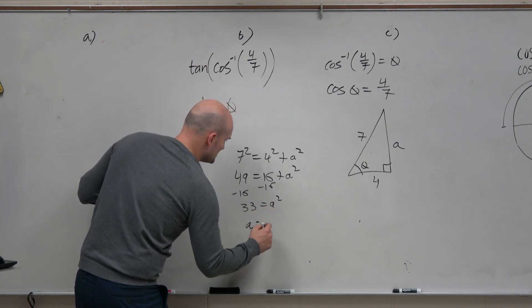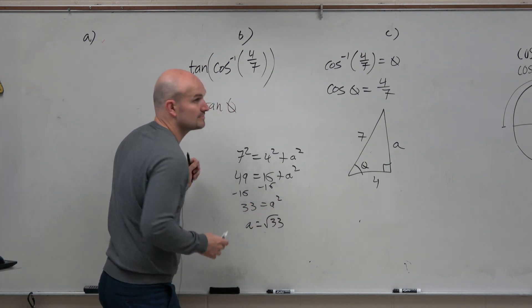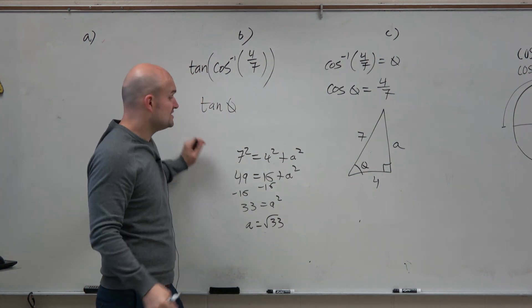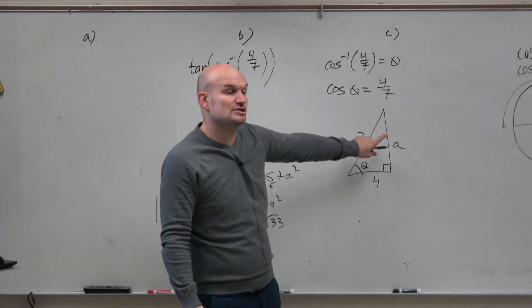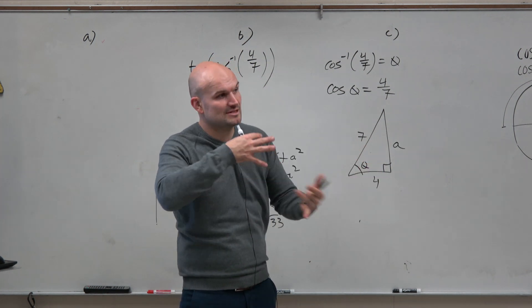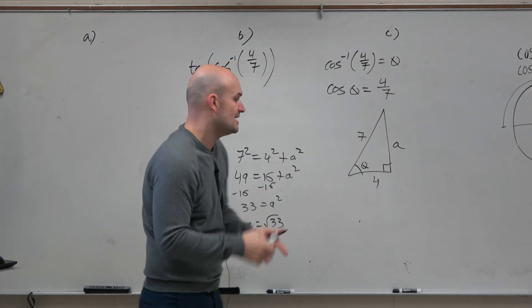Should we do plus or minus, or should we just use the positive version? We just use the positive version, guys. Because again, this is just a triangle in space. There is no x, y-axis. There are no quadrants or any restrictions like that.